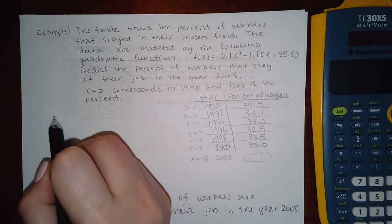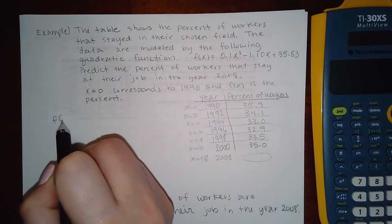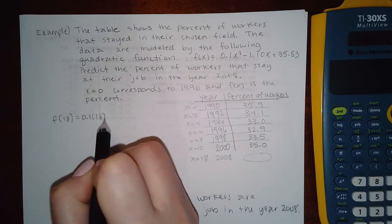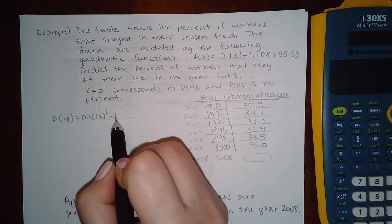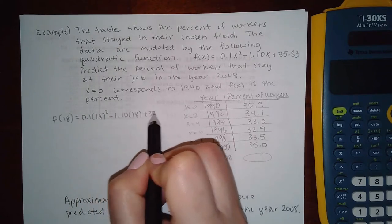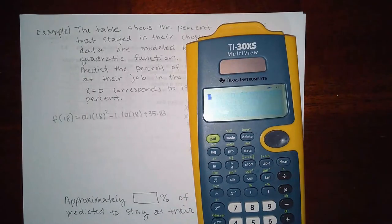What they're asking you for is to find that y value, so all we need to do is take and plug in 18 for x. So what do we get here? Let's see: 0.1 times 18 squared minus 1.10 times 18 plus 35.83.